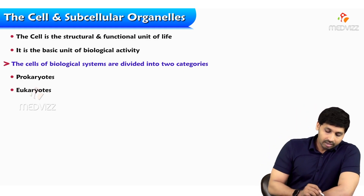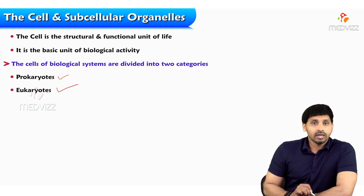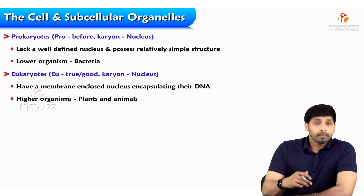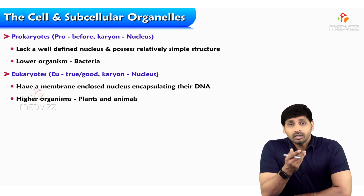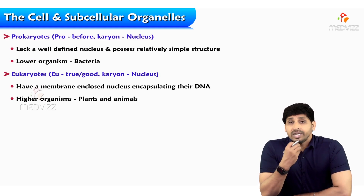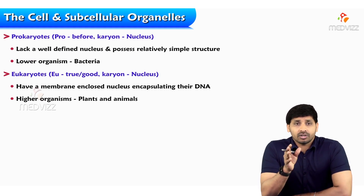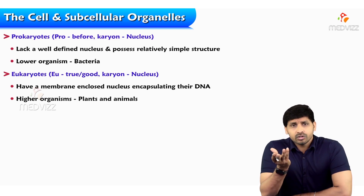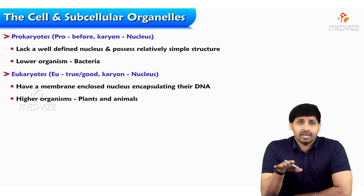As mentioned earlier, there are two types of cells: prokaryotic cell and eukaryotic cell. Prokaryotes lack a well-defined nucleus and possess a relatively simple structure. In bacteria, the same applies — prokaryotic cells don't have any cell membrane; they have just a cell wall.